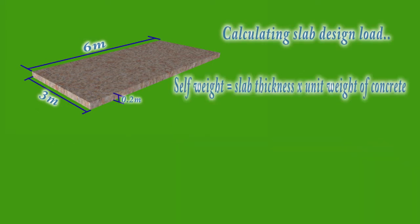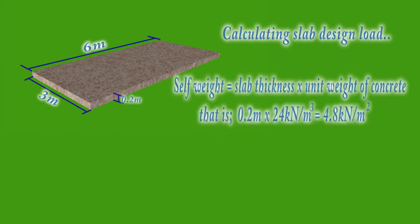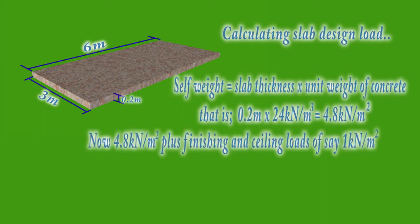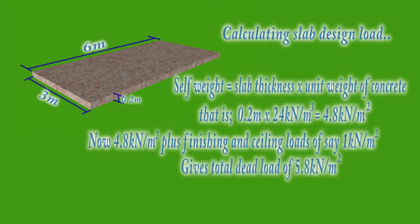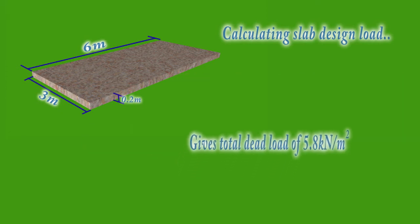Calculating slab load: self-weight equals slab thickness times unit weight of concrete, that is 0.2 times 24, which gives 4.8 kilonewtons per meter squared. Adding finishing and ceiling loads of say 1 kilonewton per meter squared gives a total dead load of 5.8 kilonewtons per meter squared.